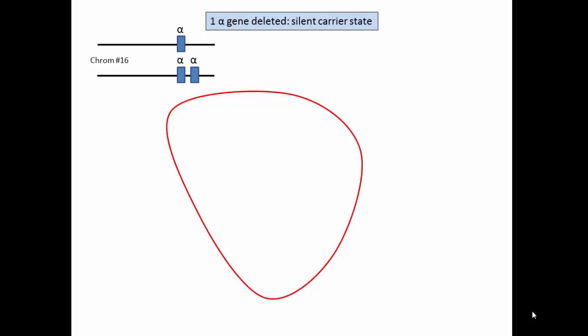When one alpha gene is deleted, it is called the silent carrier state for alpha thalassemia because it's virtually indistinguishable from having the full complement of four alpha genes.